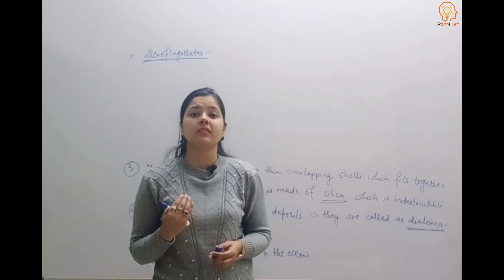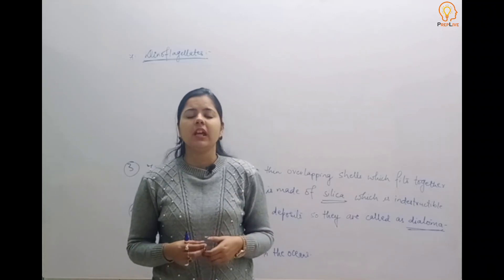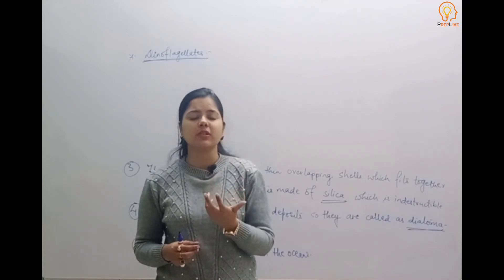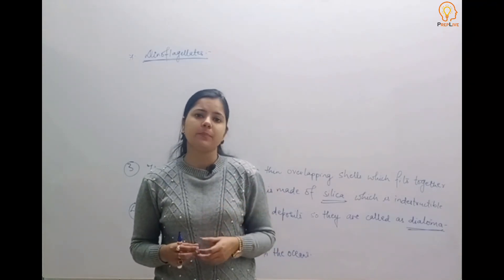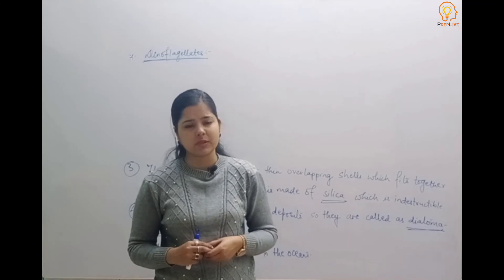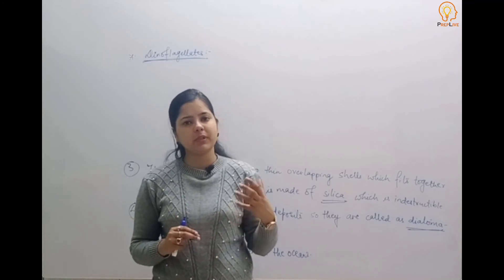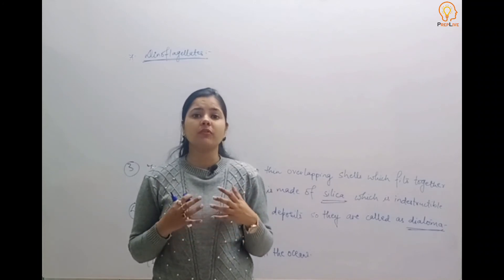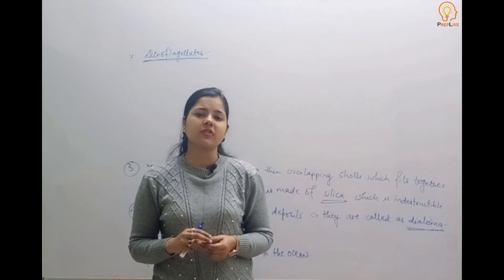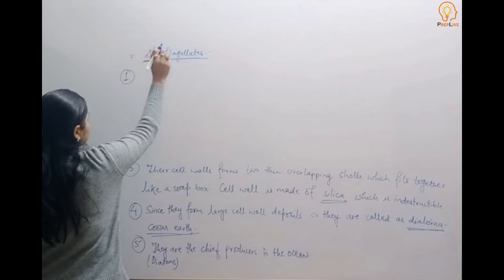An example of a red dinoflagellate is Gonyaulax. It makes rapid multiplication under the sea, and because of this multiplication the entire sea water appears red in color due to its photosynthetic pigments. This phenomenon of the sea appearing red is called 'red tides.' When they multiply, they release a large amount of toxins into the sea water, which are responsible for harming or killing other aquatic animals and plants.